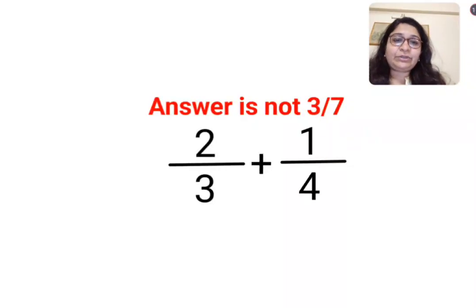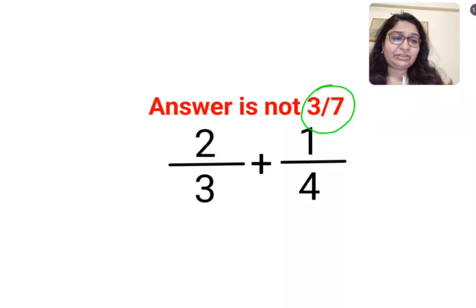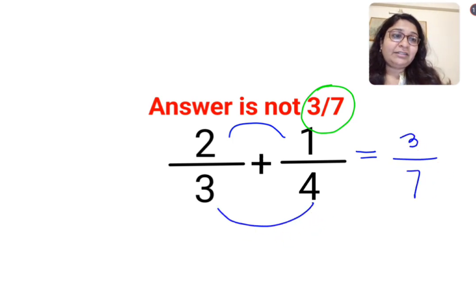Welcome everyone. Today we are going to understand why the answer for this question is not supposed to be 3/7. A lot of people think when you want to do addition of fractions, the numerators get added. So 2 plus 1 is 3, and directly you can add the denominators, 3 plus 4, which is 7.